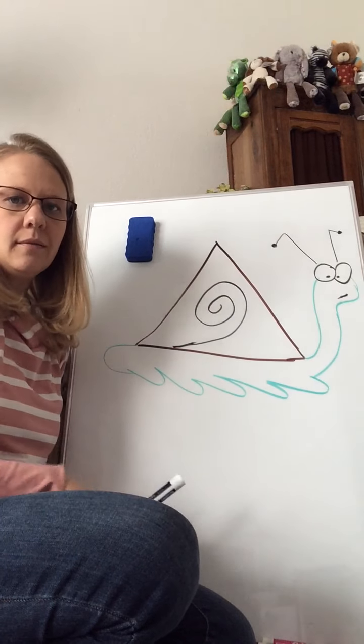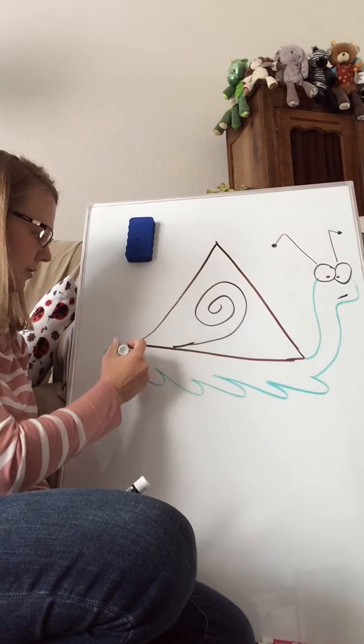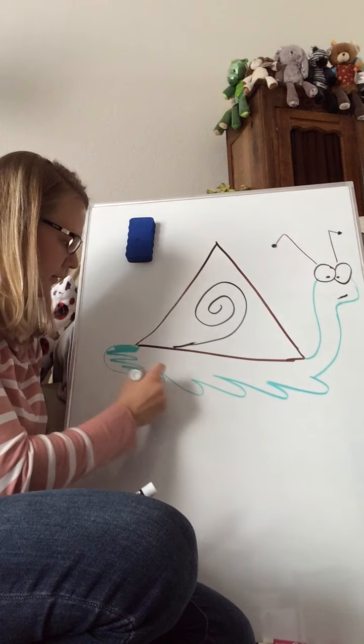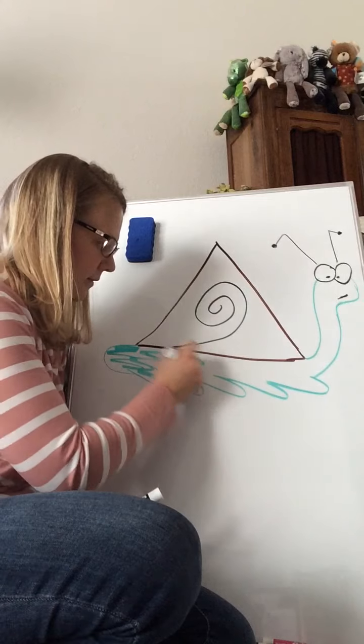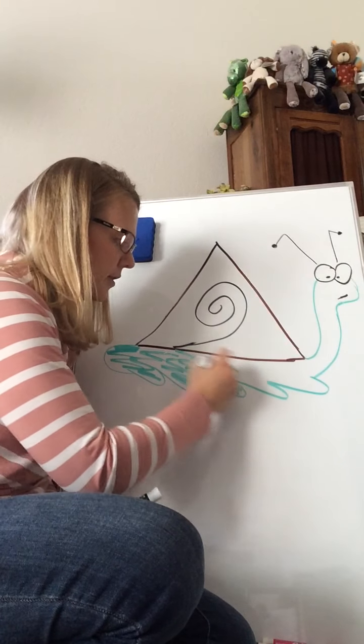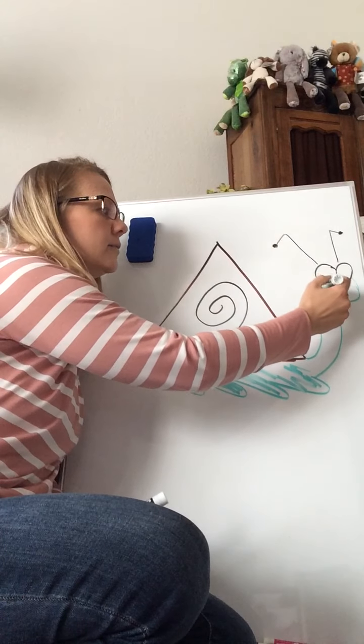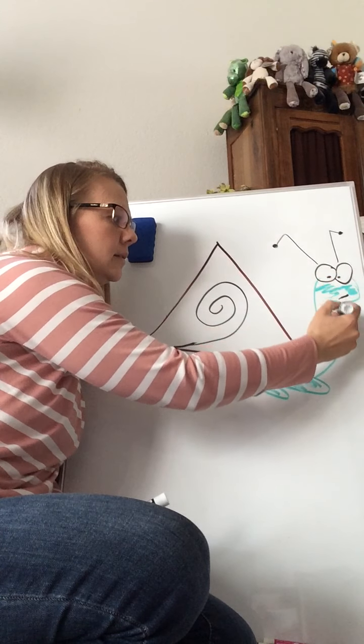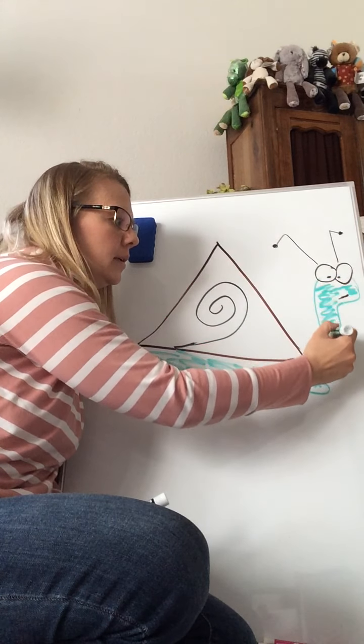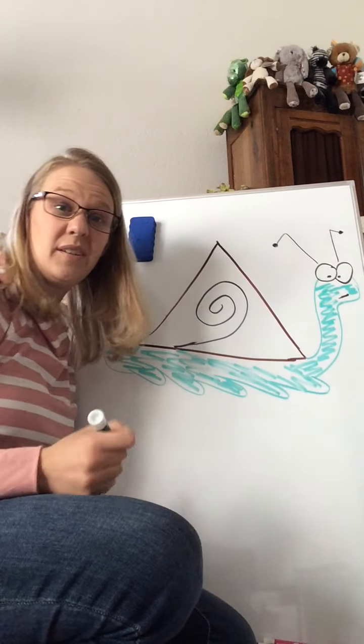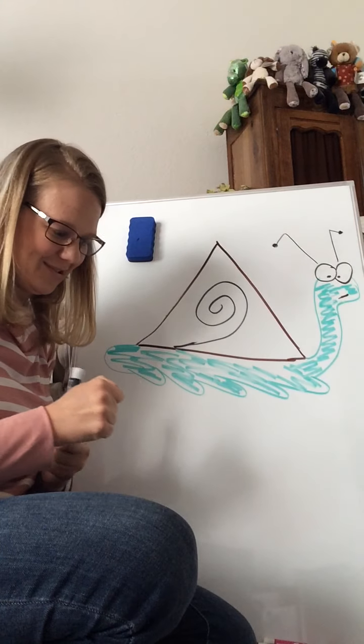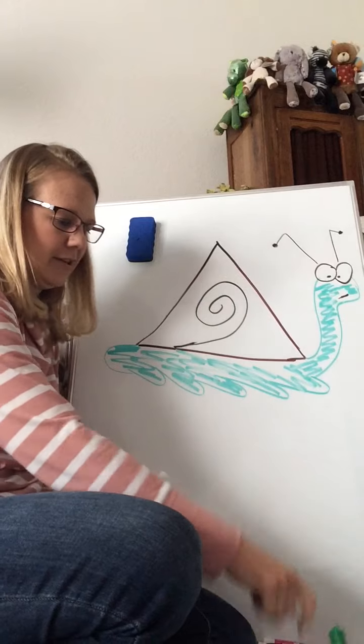And then you can add color. So you can color your snail in nice and green. Color in his slime trail. Color in his face a little. Give him some color. Hopefully your colors look a little bit better than mine do. Color his shell.